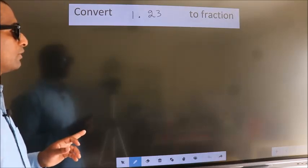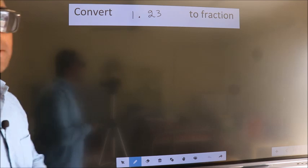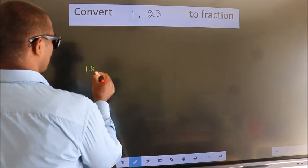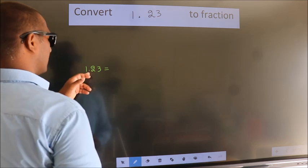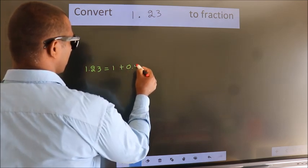Convert 1.23 to a fraction. How do we convert this? Given is 1.23. I now break this into 1 plus 0.23.